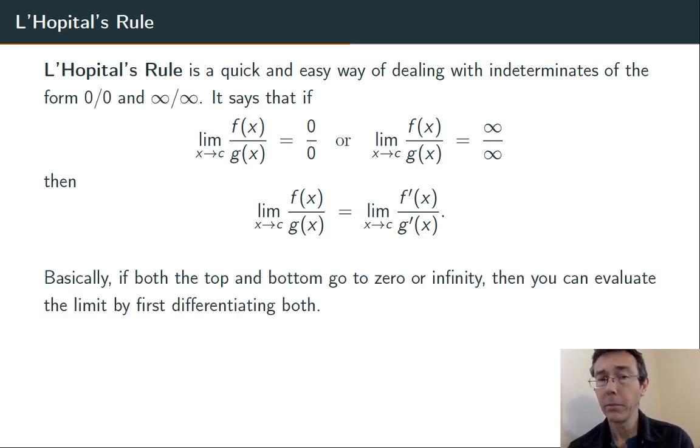Let's do one simple example, and then move on to a couple of more complicated ones. Limit as x goes to 0, sine of x over x. So I try plugging in, sine of 0 is 0, so this is a 0 over 0 form. L'Hopital's rule says I can differentiate the top,